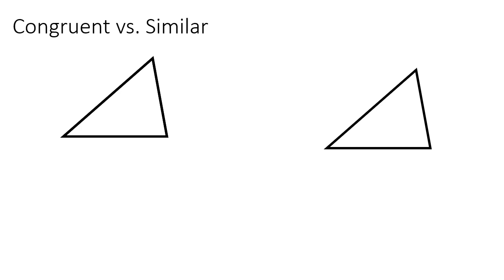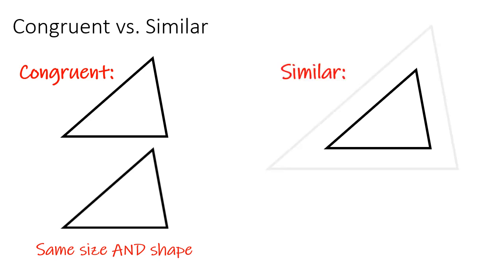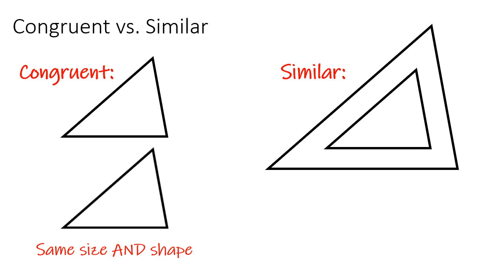Before we get into proving triangle congruence, I want you to understand what congruent is and what similar is. When we talk about congruent, we're talking about two shapes that are the same size and shape, or two polygons that are the same size and shape. When we talk about similar, which we'll be dealing with in a later unit, we're talking about the same shape only.